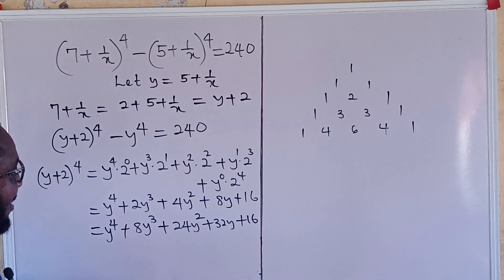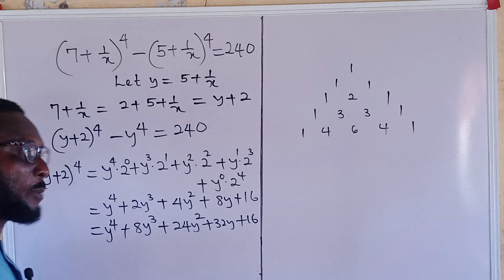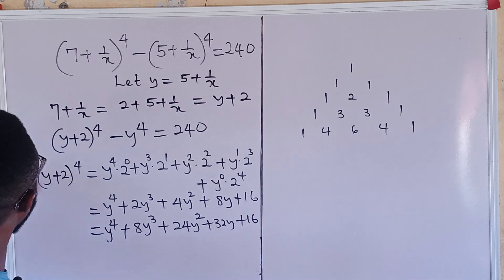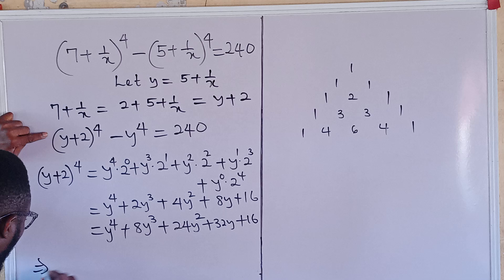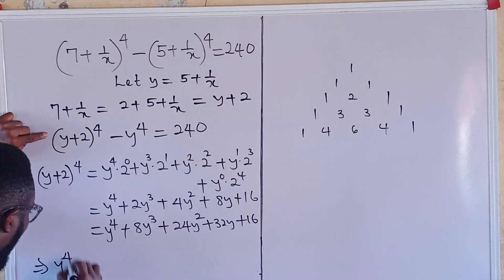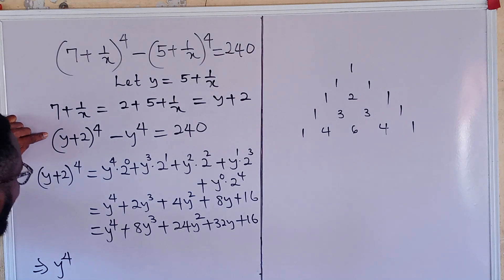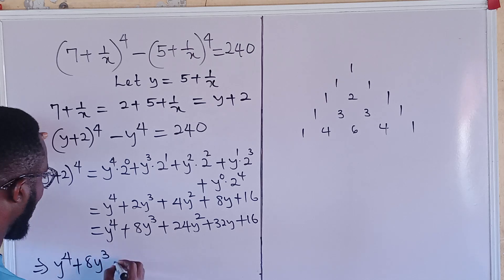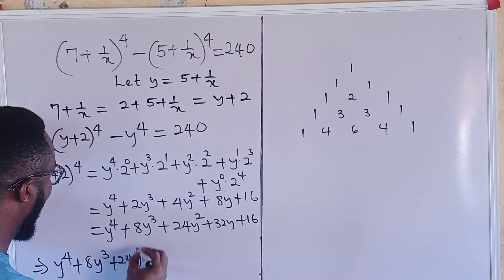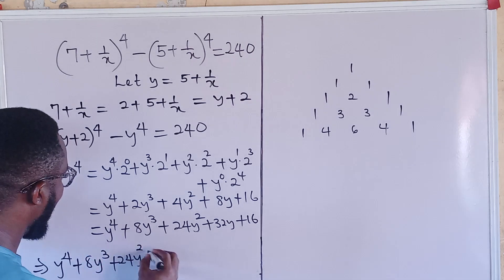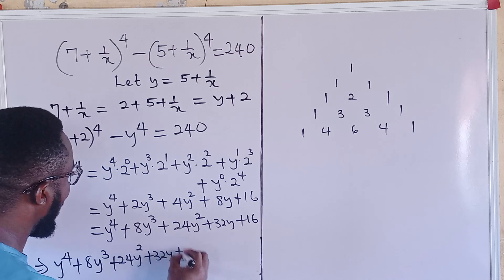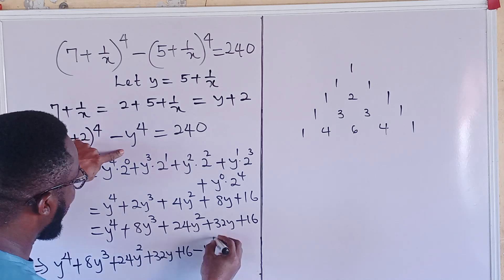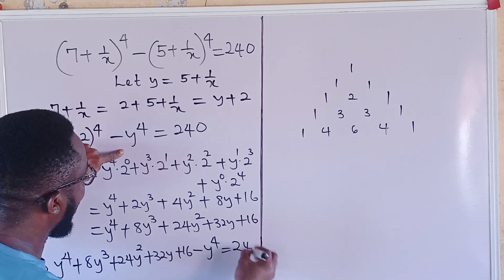So this is the full expansion of (y + 2)^4. We can then rewrite the equation as: y^4 + 8y^3 + 24y^2 + 32y + 16 minus y^4 equals 240.